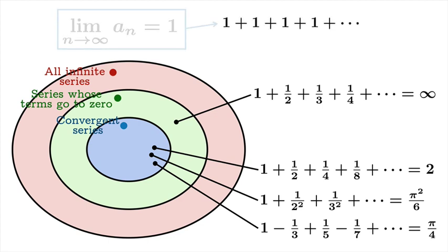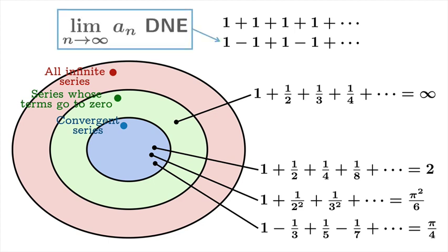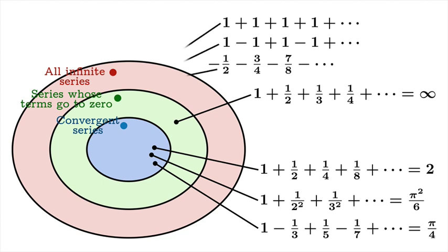Here are some examples. The first series has terms with limiting value 1, which isn't 0, so it diverges. The second series has terms that bounce back and forth between 1 and negative 1 — the limit of the nth term doesn't exist, so it diverges. A third series has terms with limiting value negative 1, which is not 0, so it also diverges. The first diverges to infinity, the second is just divergent with partial sums wobbling between 1 and 0, and the last diverges to negative infinity. If the sequence of terms does not go to 0, the series definitely diverges.